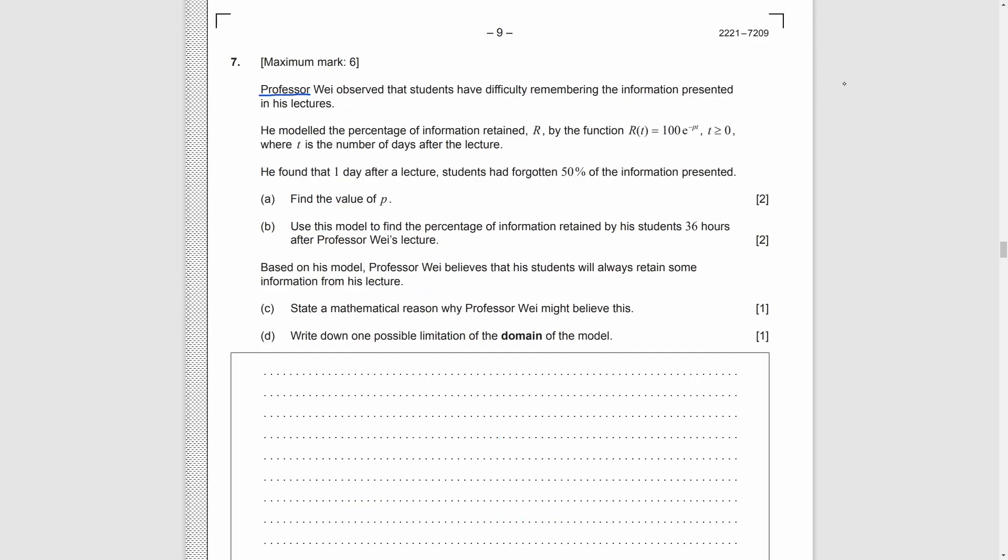Question 7. A professor has a function R, represents the percentage of the information retained by his student after his lecture. T is the number of days after the lecture. Also, he finds that after one day, only 50% of information retained by his students. Part A, we need to find p. We just substitute 1 for t and 50 for r into the function. By calculator, we can get 0.693.